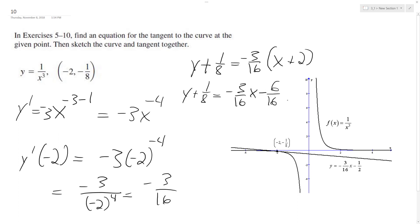That gives us 6 over 16. So then I subtract 1 eighth, so it's the same thing as saying minus 2 over 16. That's negative 8 over 16. So it becomes y is equal to negative 3 over 16 x minus 1 half. That's what it reduces down to.